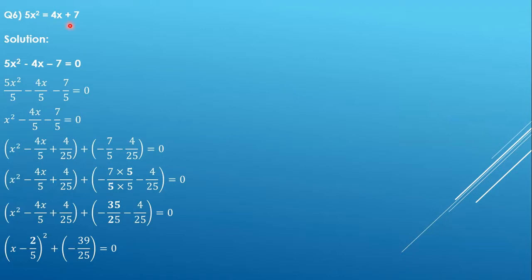First of all, we will rearrange this equation in the proper quadratic equation form. For that we have to move the 4x + 7 to the left-hand side, which gives us 5x² - 4x - 7 = 0. Now the equation is in the proper quadratic equation format.